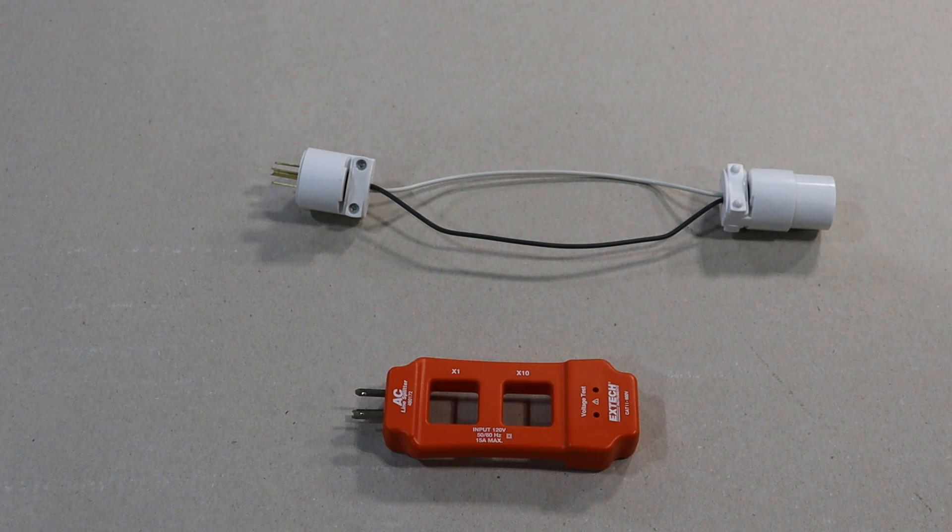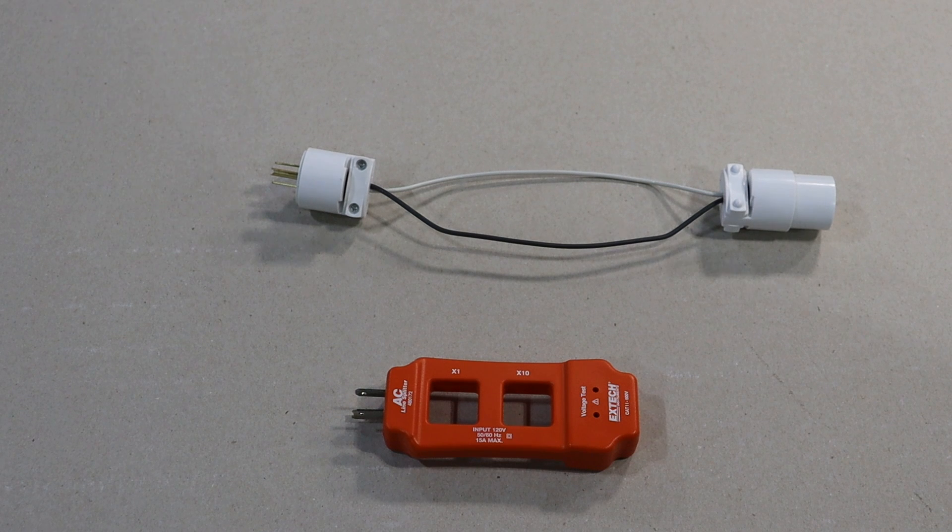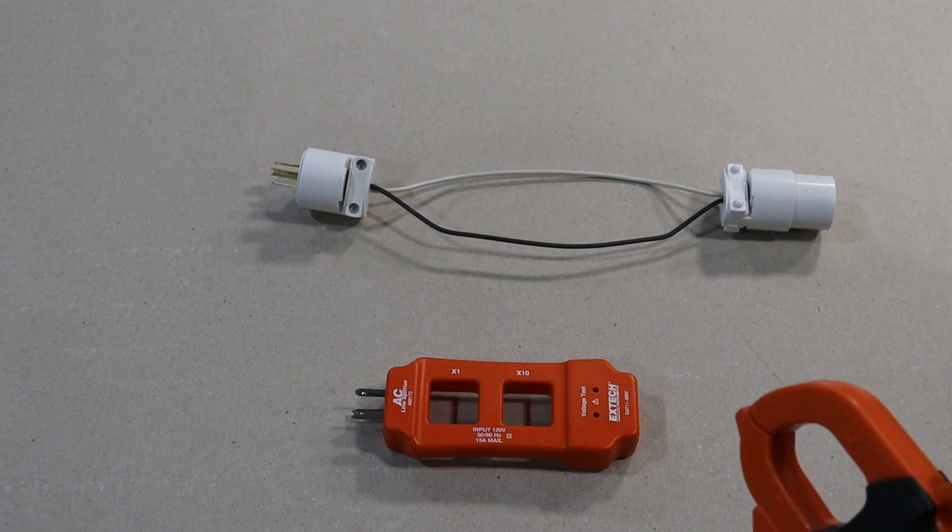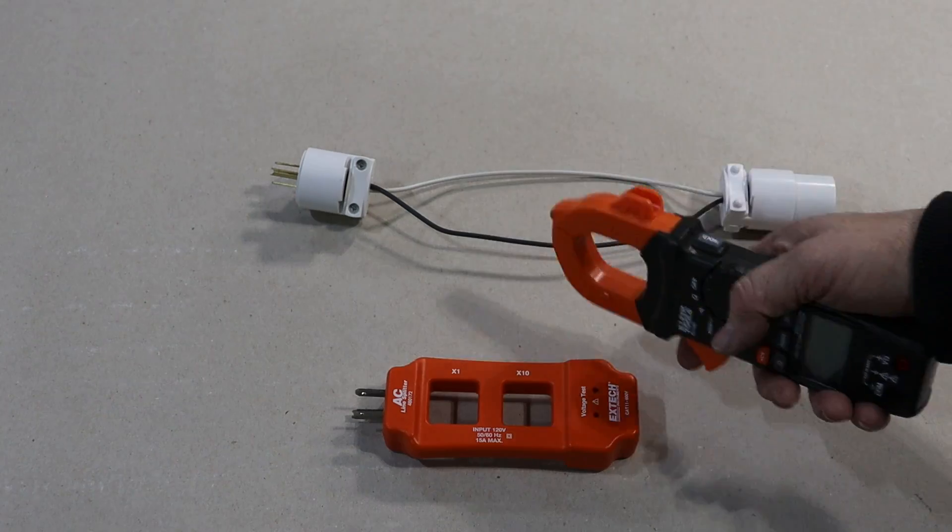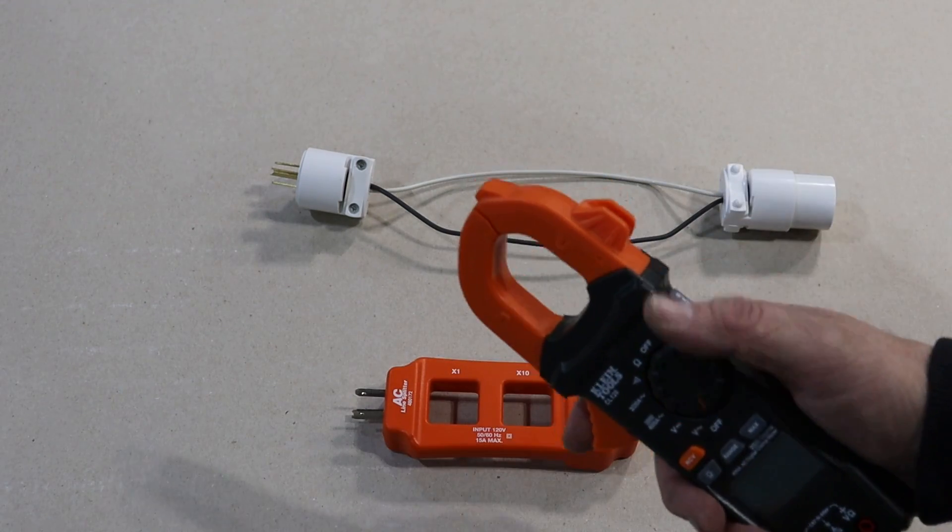So why did I just go through that super long explanation? It's because the way I'm going to measure the amperage of the jackhammer or how much amperage the jackhammer is going to draw when it's running, I'm going to need some way to split the lines apart so I can use my clamp.